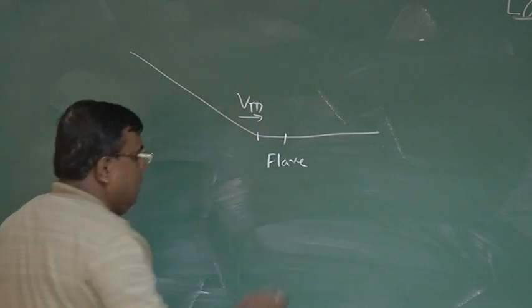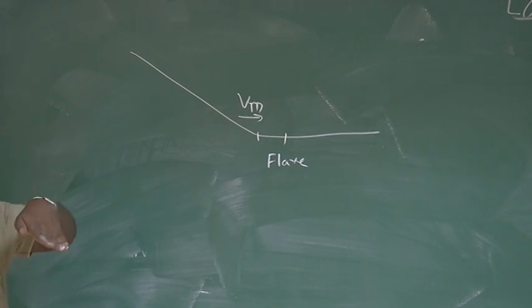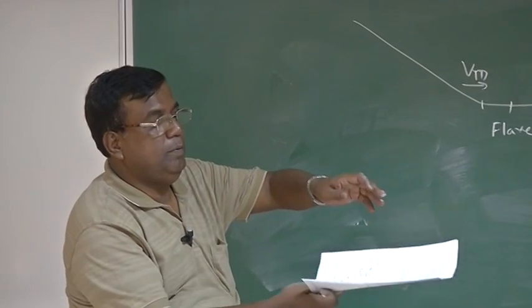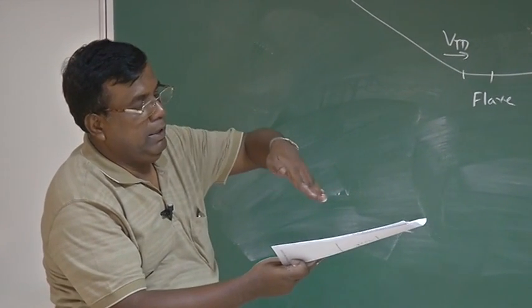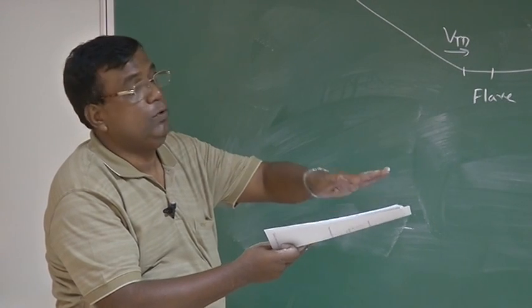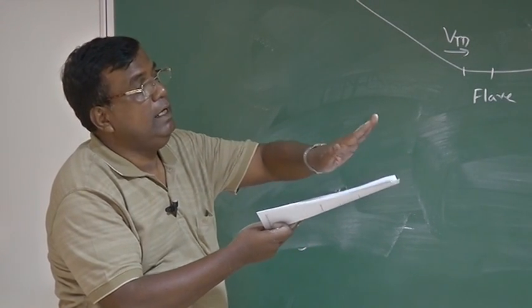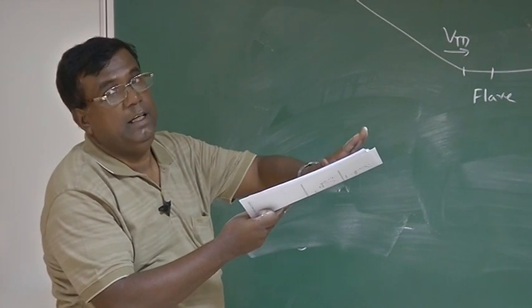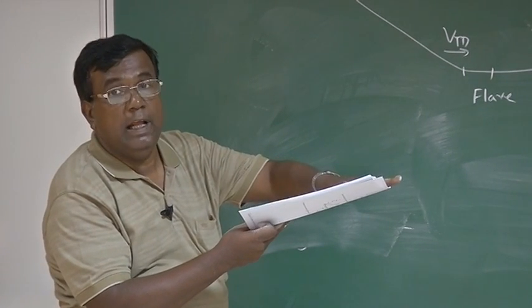Flare means the airplane is coming like this. Let us see, this is the air strip and the airplane is coming like this. Near the air strip, it will flare up, so that it touches the rear landing gear first and then nose landing gear.